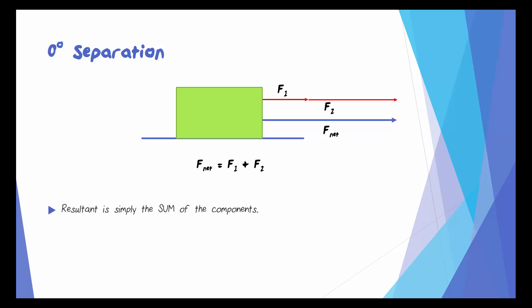What's also true about zero degrees of separation is that this results in the maximum possible resultant. There's no other orientation of F1 and F2 that would give us a greater resultant.